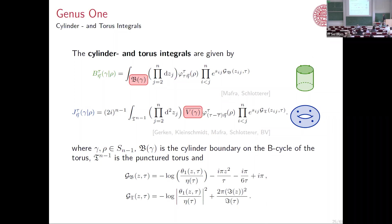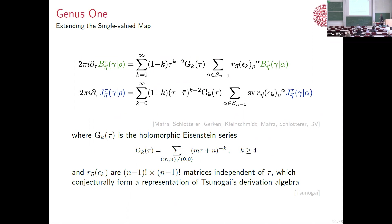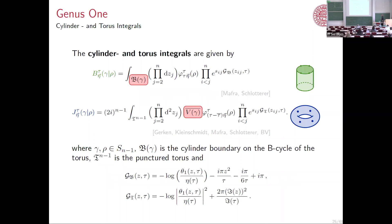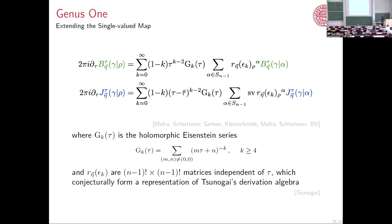Then we can introduce the cylinder and torus integrals. For the cylinder integral, we integrate over the cylinder boundary with this full generating function of integrands times the Koba-Nielsen factor. For the closed string, we integrate over the punctured torus with this anti-holomorphic V function — which behaves similarly to the cylinder boundary — and another generating function of integrands on the torus times the Koba-Nielsen factor. Recall we're not integrating out the modular parameter tau; we actually want to look at the differential equations in tau.